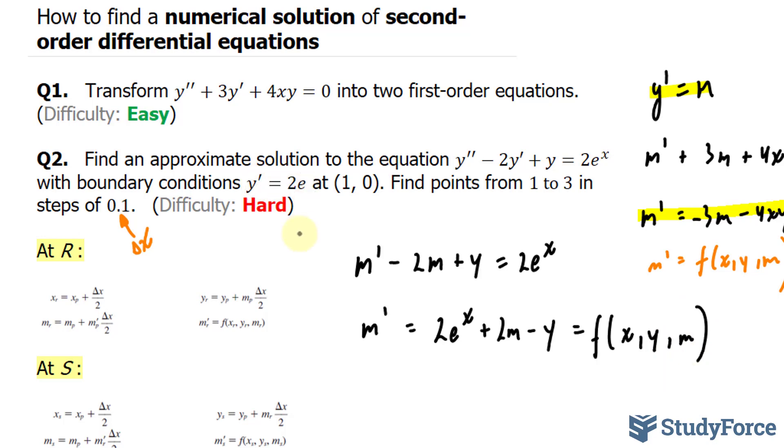Now we're also told the boundary conditions: y' = 2e at the point (1, 0). At our initial point P, we've been told what x and y are. This will represent x_P, and this coordinate will represent y_P. And this 2e will represent the slope at that point, which I'll call m_P. I'll take these values and substitute them into this function, and that will get me the slope m'_P.